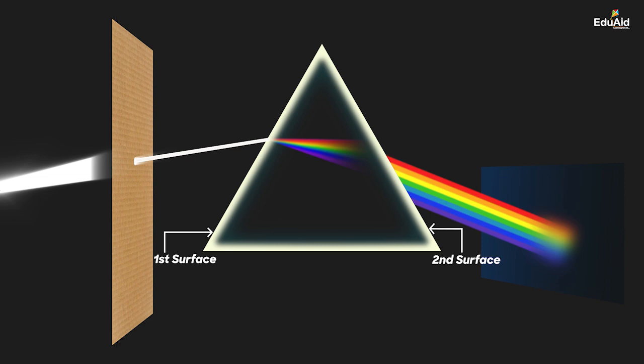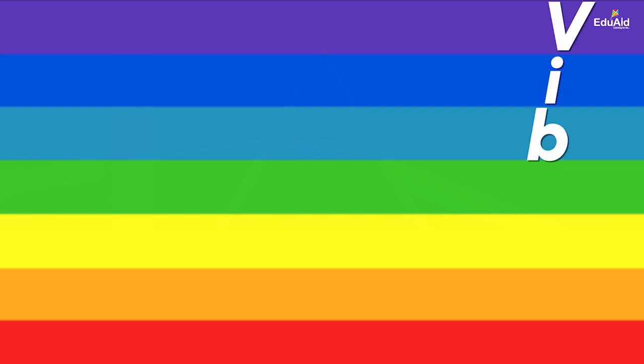When you actually carry out this activity, you will see that on the screen you will get patches of different colours, excluding white light. White light is not there, but seven different colours are there. What is the sequence of colours? Violet, indigo, blue, green, yellow, orange, red. To remember the sequence, we use the acronym formed from the first letter of every colour: VIBGYOR.